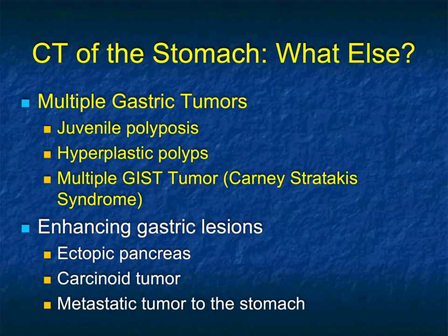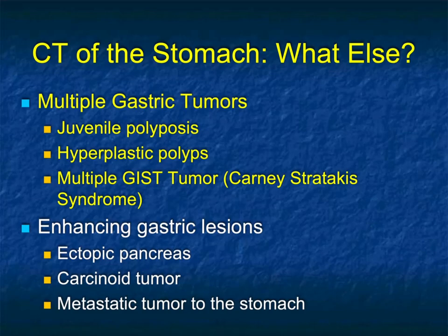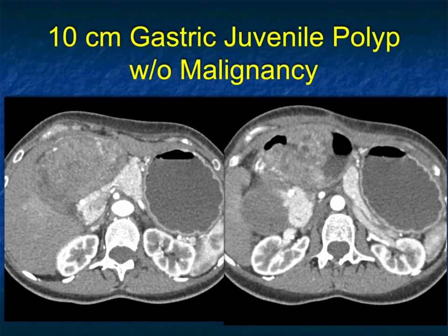So I've now covered the main things — but why is this lecture different? Because we're going to look at other things: things that can give you multiple gastric tumors like polyposis, and some of the enhancing gastric lesions, whether it's an ectopic pancreas, a carcinoid tumor, or metastasis.